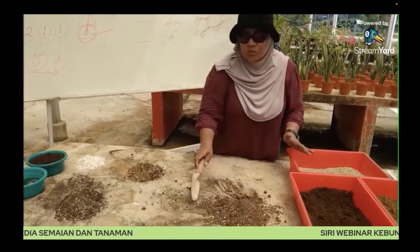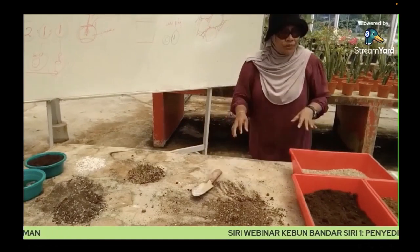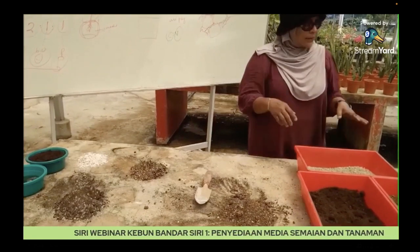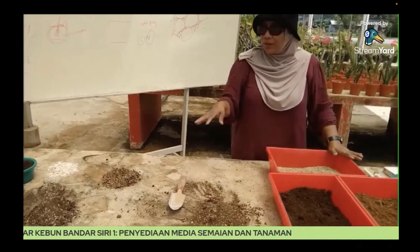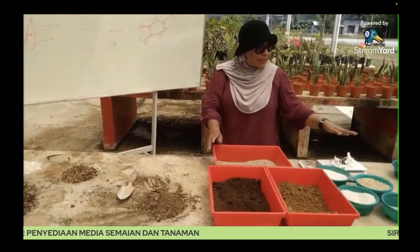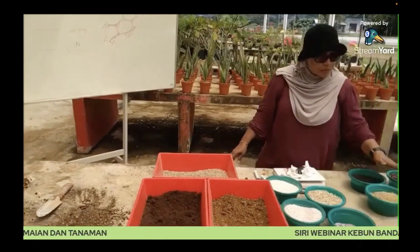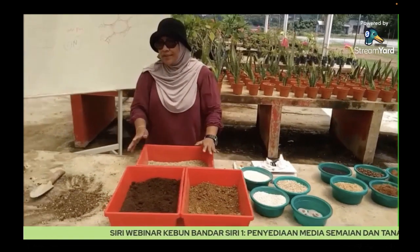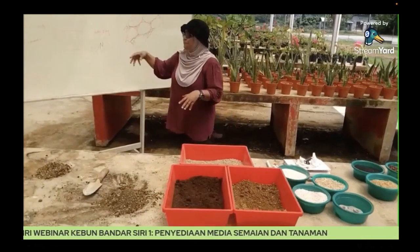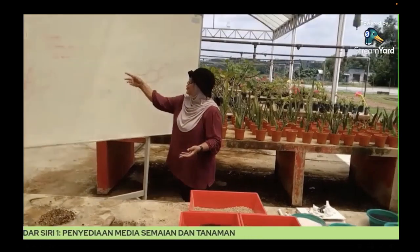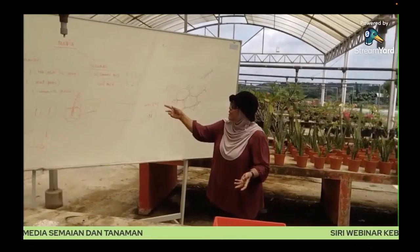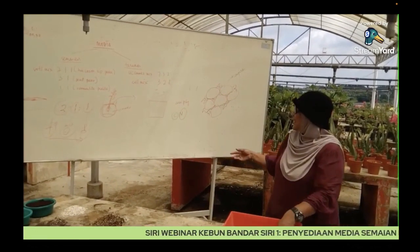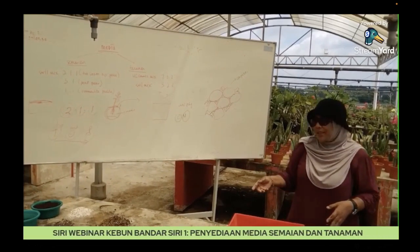Inilah media untuk 3:2:1. Jadi bila dah tahu setiap satu fungsi, setiap satu ciri-ciri kimia, dan juga setiap satu ciri-ciri fizikal tu, jadi sebab dia terlahirnya resepi untuk 3:2:1, 2:1:1, all these things memang daripada buat research dan kita suggest daripada growers untuk gunakan dia sebagai media penanaman.